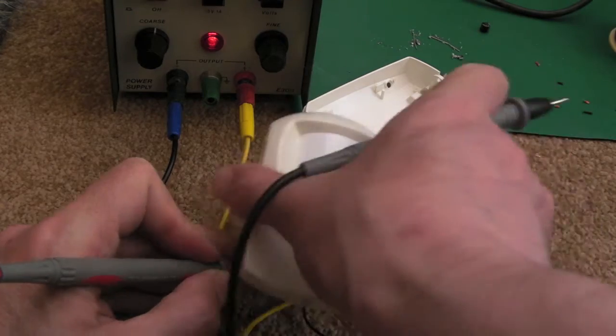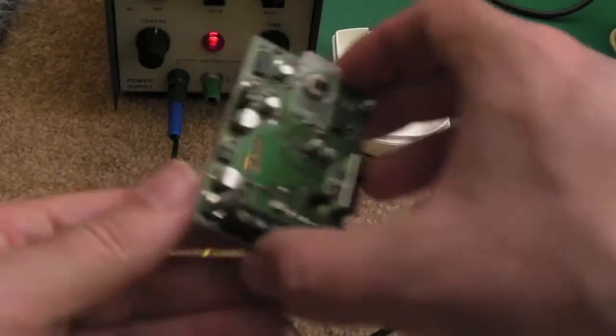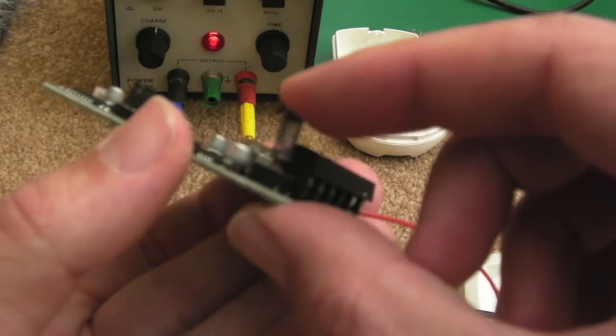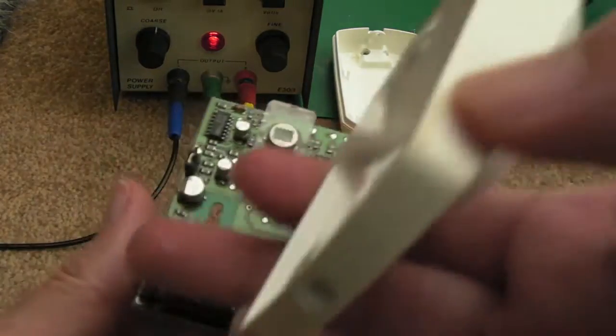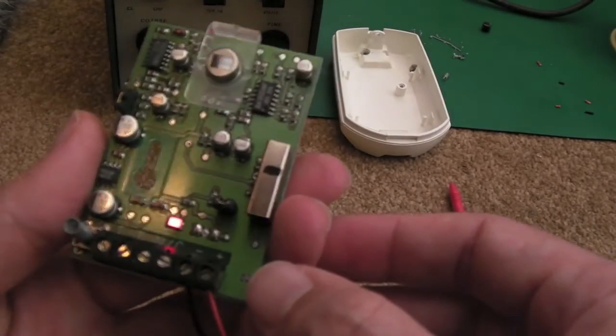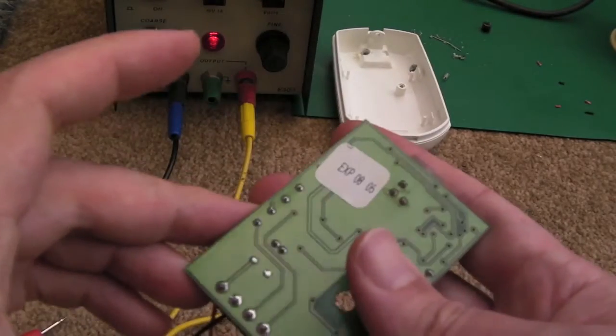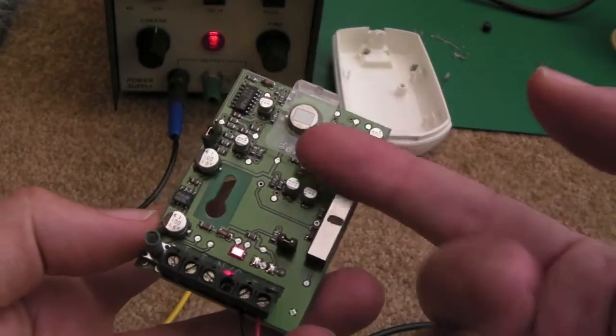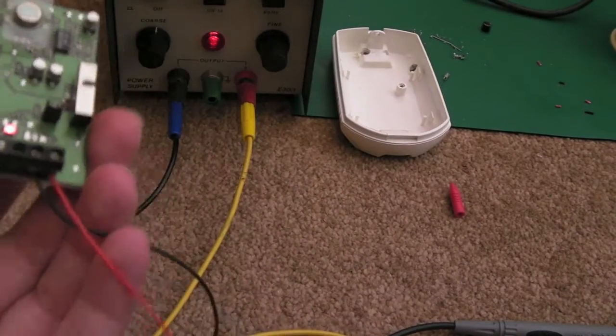And the idea is the lid obviously pushes that spring down there. As you can see, it pushes that little micro switch down. And that's the tamper, to detect whether someone's tampering with it, to take the fascia off, et cetera. So yeah, that's it really. But I just wanted to cover this while I was there.